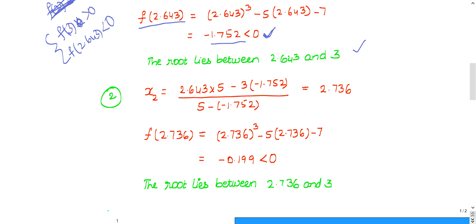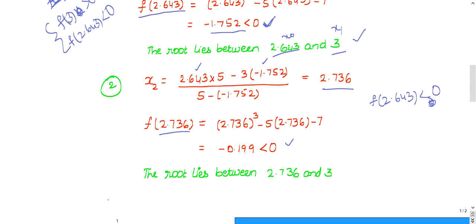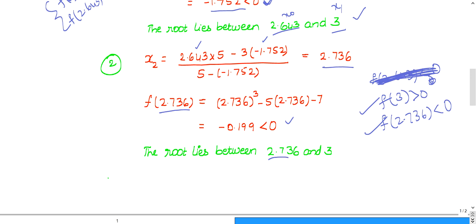Then find x2 once again. The new value of x0, this is now new x0, this is new x1. Now find x2 again. New values I have substituted. Then I got it as 2.732. If you have any queries, you can post them in the comment box. f of 2.732 I calculated, once again I got less than 0. So previously f of 2.643 less than 0 and f of 3 greater than 0. Now one more value I got, f of 2.736, this is also less than 0. So the new root lies between 2.736 and 3.